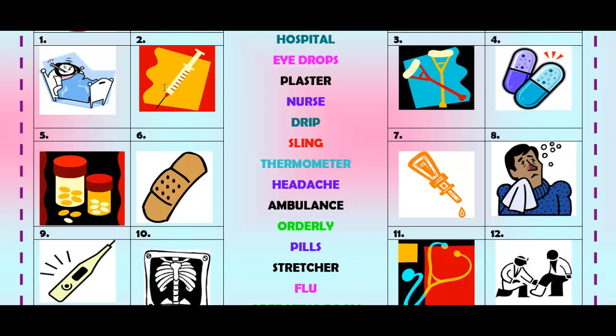Number six is an injection — most people don't like this, I hate needles. Number seven, I always forget this word — it's called crutches. Number eight, pills — any kind of small medicine you take are called pills.